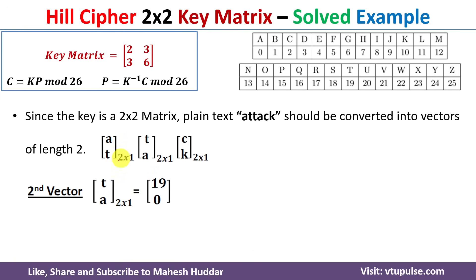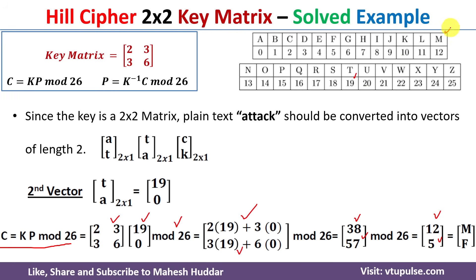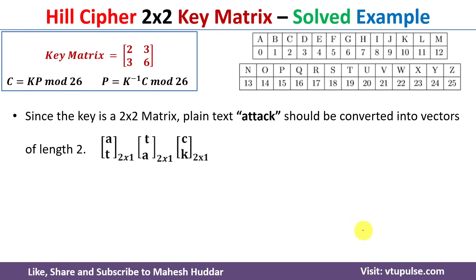For the second vector TA: T is 19 and A is 0, giving vector [19, 0]. Using the encryption equation with the key matrix: 2×19 + 3×0 = 38 for the first element, and 3×19 + 6×0 = 57 for the second. Taking mod 26: 38 mod 26 = 12 (since 26×1 = 26, 38 − 26 = 12), and 57 mod 26 = 5. So 12 is M and 5 is F — the vector TA is encrypted to MF.